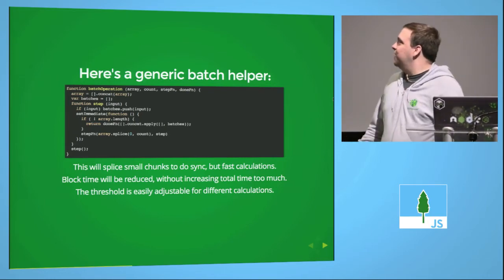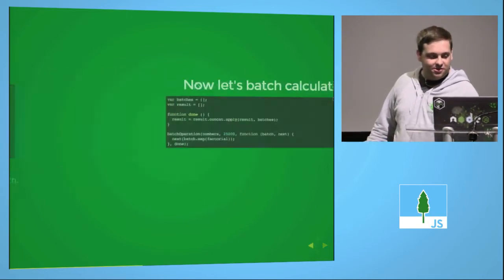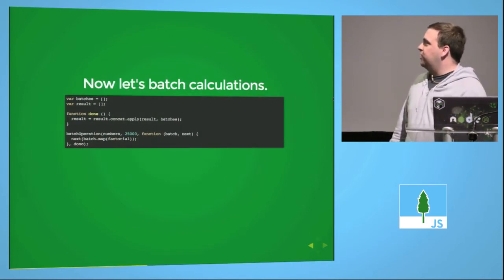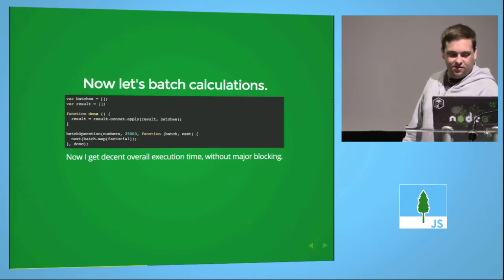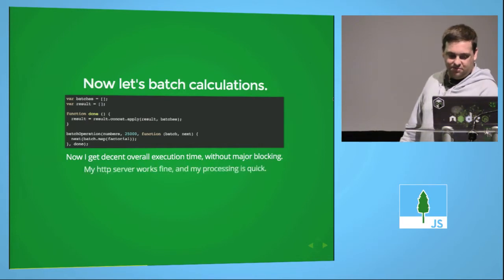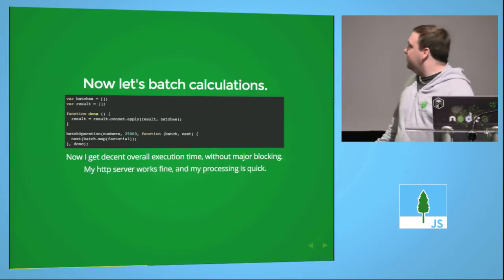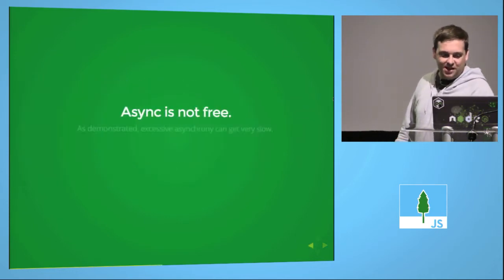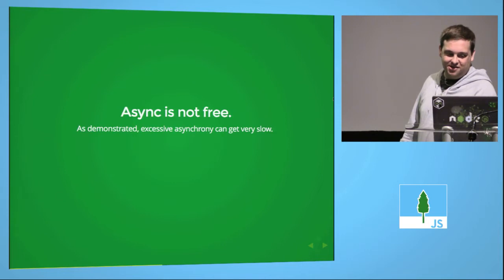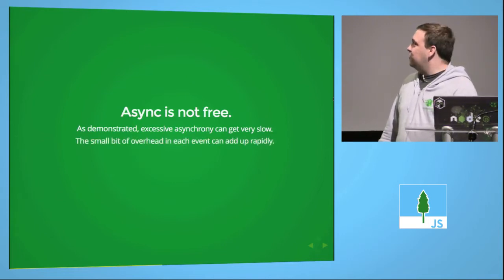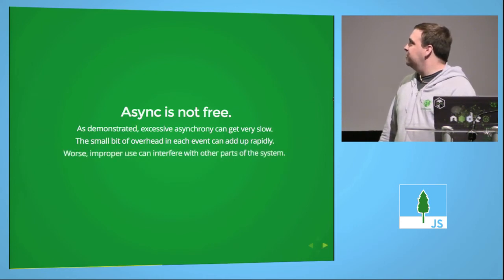The count lets you easily adjust the threshold. Running our now-batched calculation, I get decent overall execution time without major blocking. My HTTP server works fine and my processing is quick. Async is not free — as demonstrated, excessive async can get very slow. That small bit of overhead adds up and can interfere with other things.